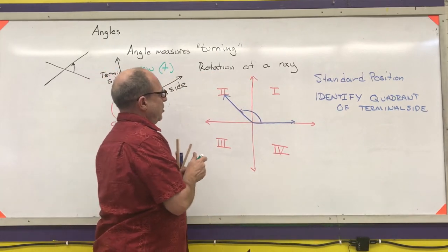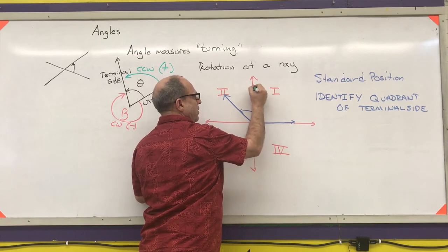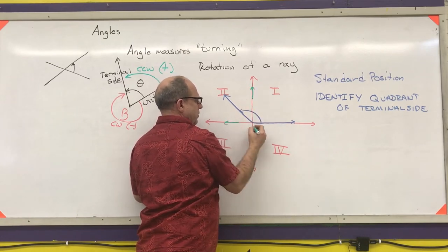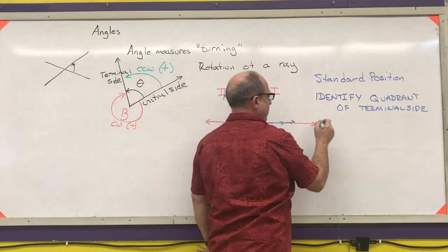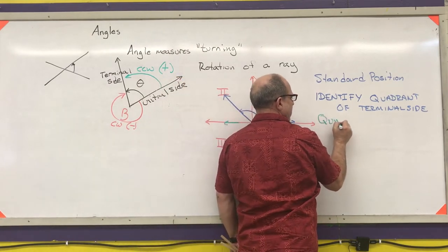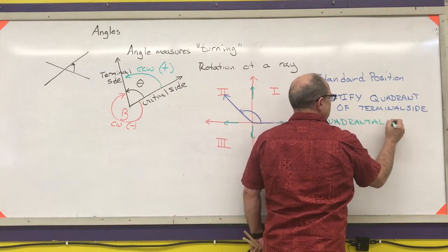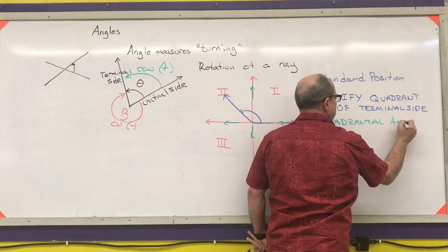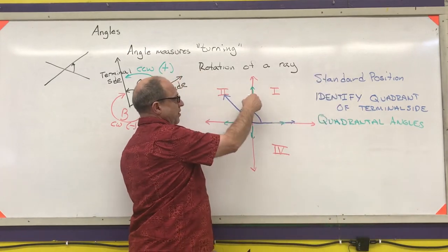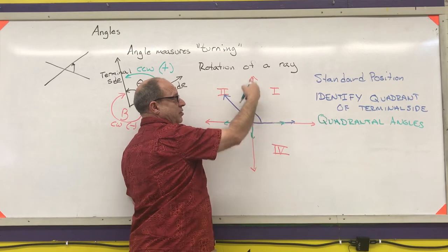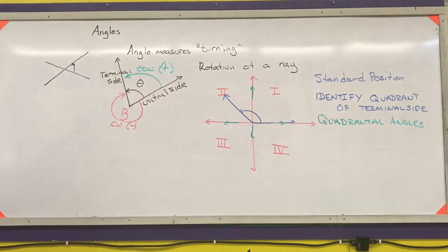If an angle's terminal side is on the x- or y-axis, like the green ones shown, they are called quadrantal angles. This one is not in quadrant 1, it's not in quadrant 2 — it is a quadrantal angle because it lies on the y-axis.